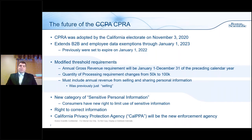The ballot measure also modifies threshold requirements. As of January 1st, 2023, the annual gross revenue requirement will be specifically defined as January 1st through December 31st of the preceding calendar year — clarifying previously vague language that allowed ambiguity around fiscal versus calendar years. The quantity of processing requirement also grows from 50,000 to 100,000 records, which may exclude some companies from coverage. It's important to understand your current quantity of processing and where you expect to be by January 1st, 2023.